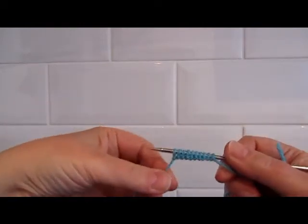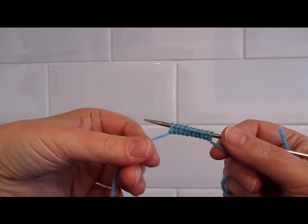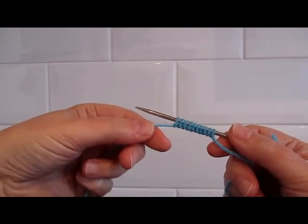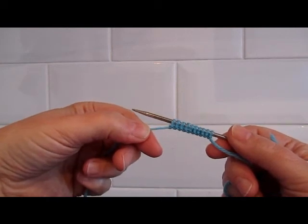There you can see you've made nice, evenly-spaced, evenly-sized stitches ready to start knitting, and it makes a very stretchy cast-on.